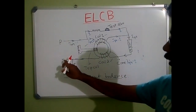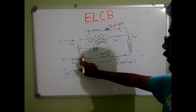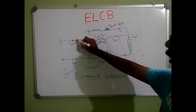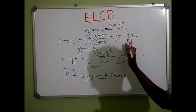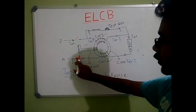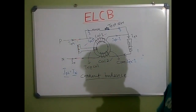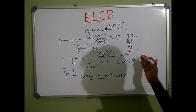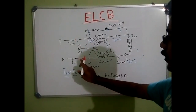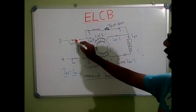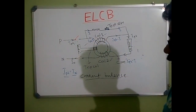This phase and neutral is the main supply. There is a switch which is controlled by the ELCB. If it is open-circuited, the supply is isolated from the load or system. When it is closed, the supply is connected to the electrical system or load. When earth leakage happens, this ELCB activates, open-circuits this switch, and isolates the supply from the load.